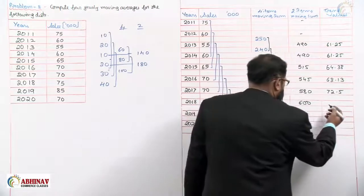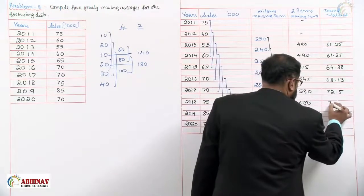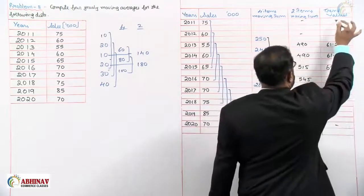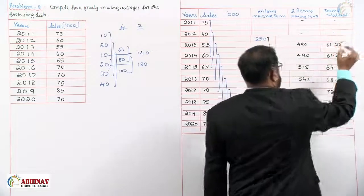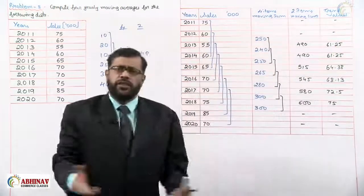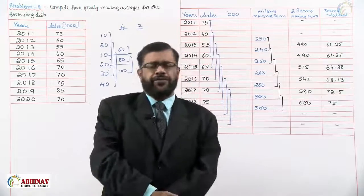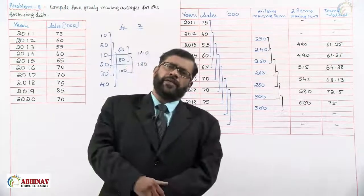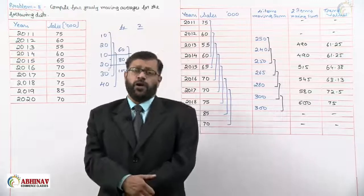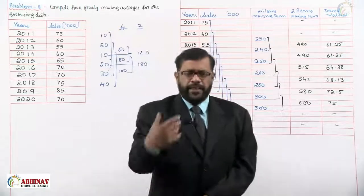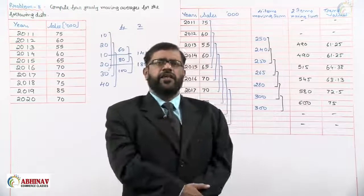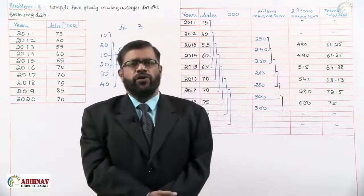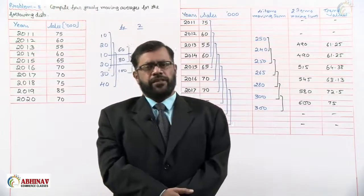Continuing in the same way, the last value 600 divided by 8 gives 75. For the first two years and the last two years the trend values will be nil. That is how we calculate the trend values for four-yearly moving averages. In the next session we shall take problem number nine along with a graph on four-yearly moving average. Thank you.